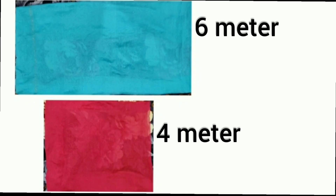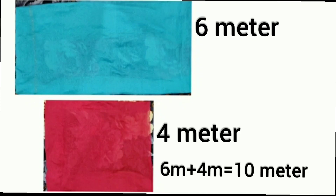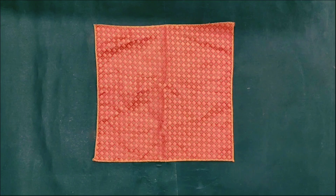Students, Rani's mother required 6 meters of gotha for her dupatta, so together they required 6m + 4m = 10 meters for both dupattas. To find out how much gotha is required, Rani's mother added the length of all the sides of the dupatta. So, the sum of the length of all the sides of a shape is called its perimeter.